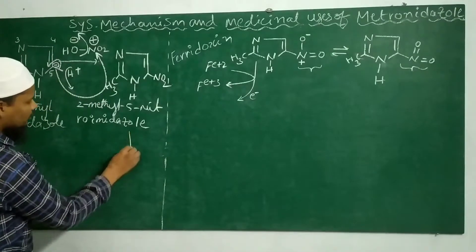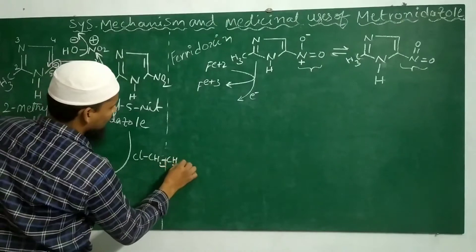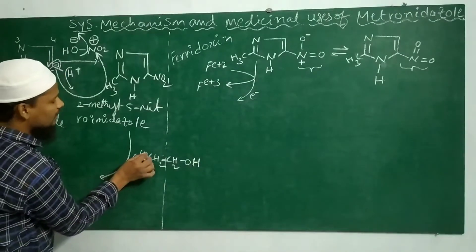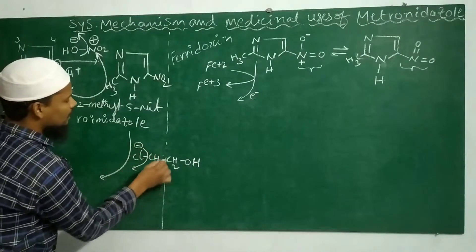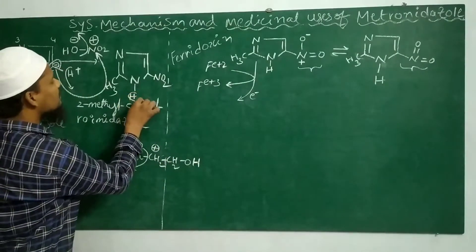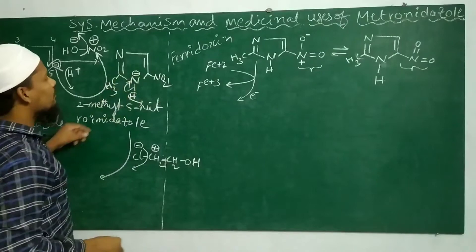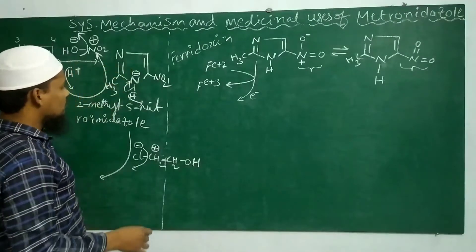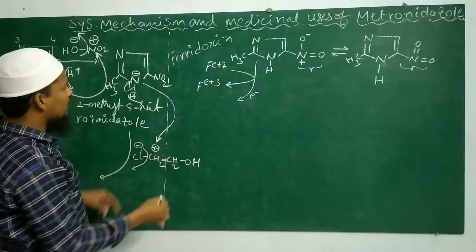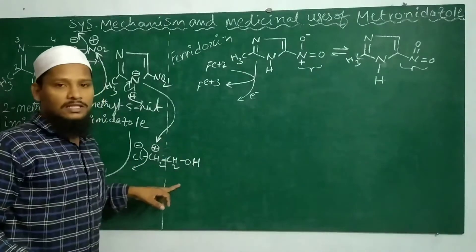This molecule, 2-methyl-5-nitroimidazole, is now treated with chloroethanol. Chlorine is an electronegative group and is eliminated as Cl minus, so the carbon gets a positive charge. Hydrogen is eliminated and those electrons are taken back by the nitrogen, giving nitrogen a negative charge as electron density increases. The electron-rich nitrogen then donates electrons to the electron-deficient carbon, forming a nitrogen-carbon single bond.